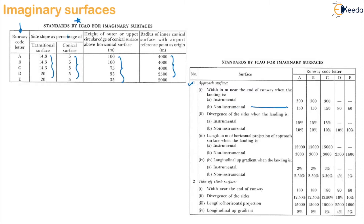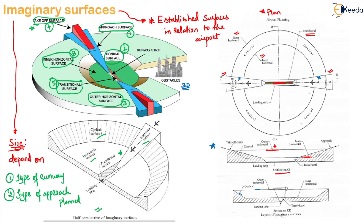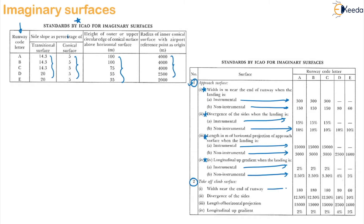For instrumental landing you use these values, and for non-instrumental landing these values. This covers: the width near the end of the runway, the divergence of the sides — 15% for instrumental and 10% for non-instrumental — the length in meters of the horizontal projection of the approach surface for both instrumental and non-instrumental landing, and the longitudinal upgrade gradient. The same parameters — width near end of runway, divergence of sides, length of horizontal projection, and longitudinal upgrade — are also given for the takeoff climb surface for different runway code letters.